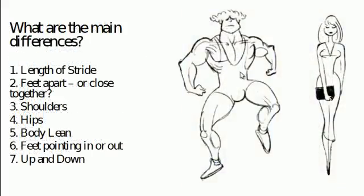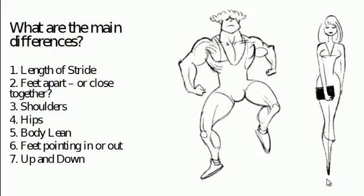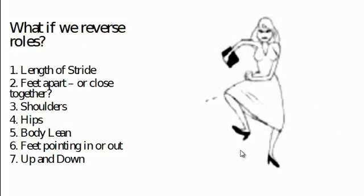So the main differences between men and women: length of stride, feet apart — wide apart for men, close together for women; shoulders on the man, hips on the woman; maybe the body leaning forward on the man, maybe the woman leaning backwards. Feet pointing outwards on the man and possibly pointing slightly inwards on the woman. Lots of up and down on the man, very little up and down on the woman. Those would be the main characteristics.